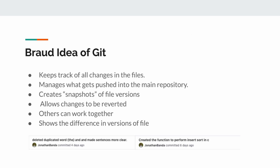Now let's talk about the broad idea of Git. It keeps track of all changes in your files. You start a repository, start working on it, and when you're ready you add, commit, and push your work to the main repository — the original master branch.